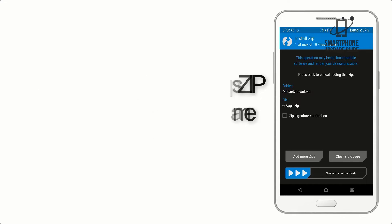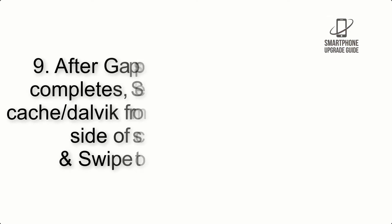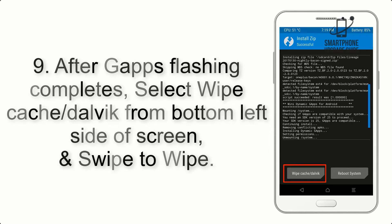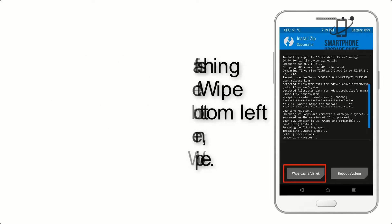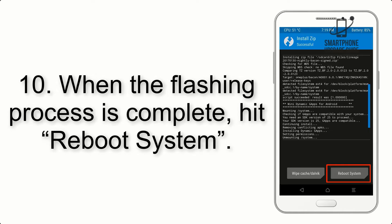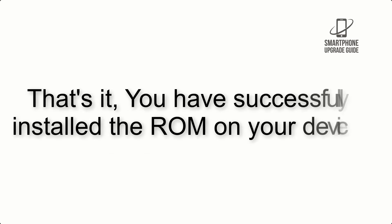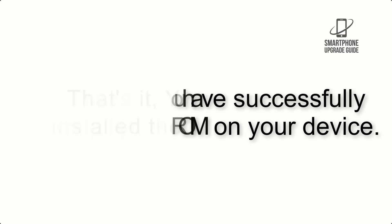Step 8: Flash the GApps zip package in the same manner. Step 9: After GApps flashing completes, select Wipe Cache and Dalvik from the bottom left side of the screen and swipe to wipe. Step 10: When the flashing process is complete, hit Reboot System. That's it — you have successfully installed the ROM on your device.